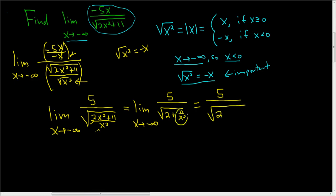this is 5 divided by the square root of 2, and this term here, as x approaches negative infinity, this approaches 0. So we have 2 plus 0,